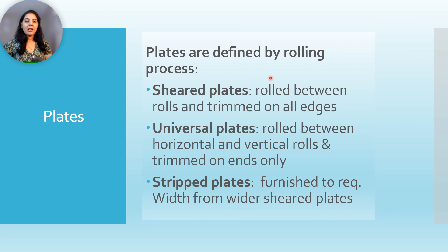Plates are defined by rolling processes and the three rolling processes are sheared plates, universal plates, and strip plates. Sheared plates are rolled between rolls and trim on all edges. Universal plates are rolled between horizontal and vertical rolls and trim on ends only. And strip plates are furnished to required width from wider sheared plates.